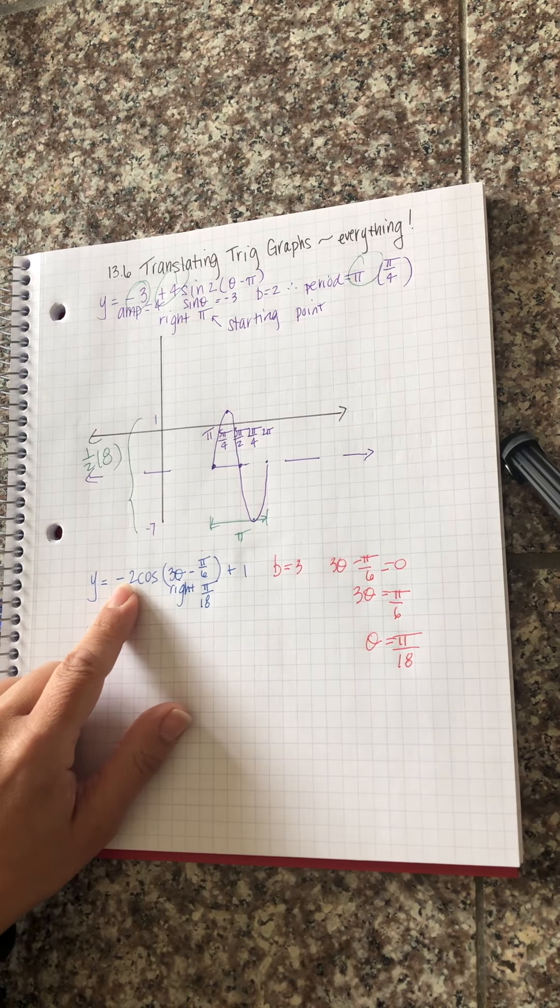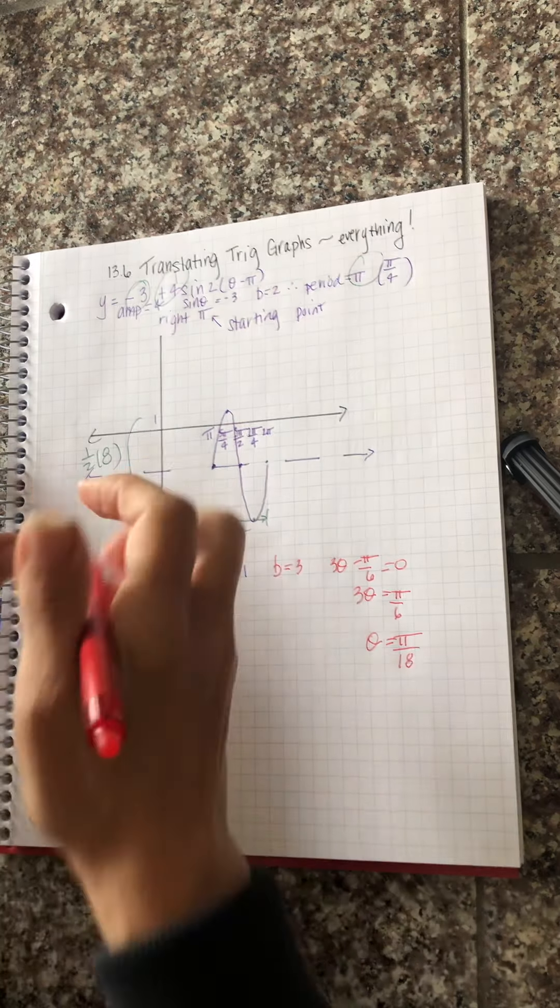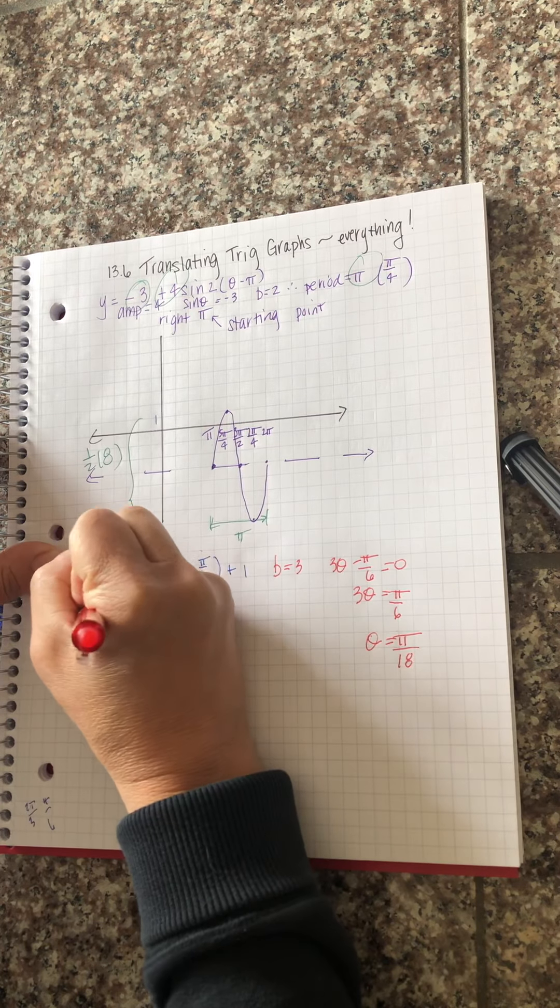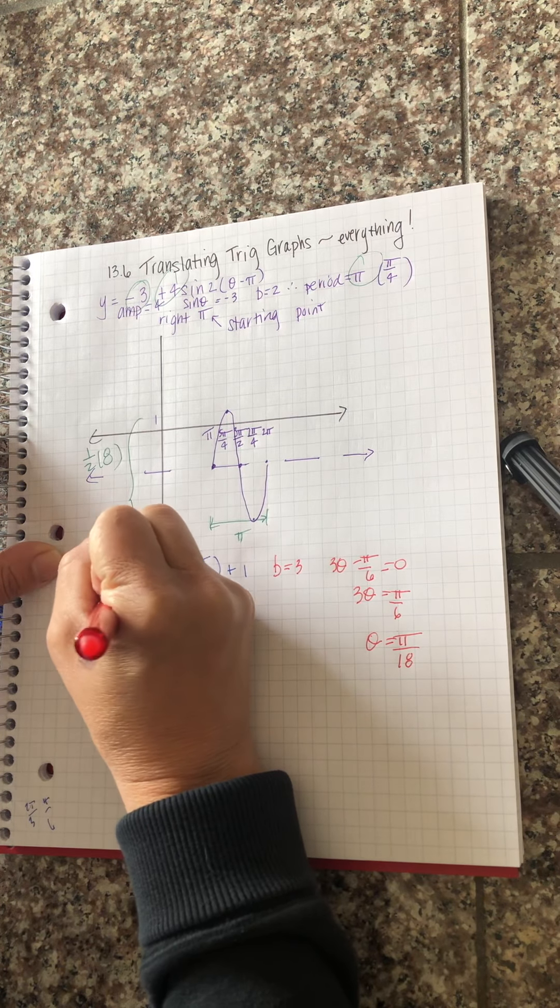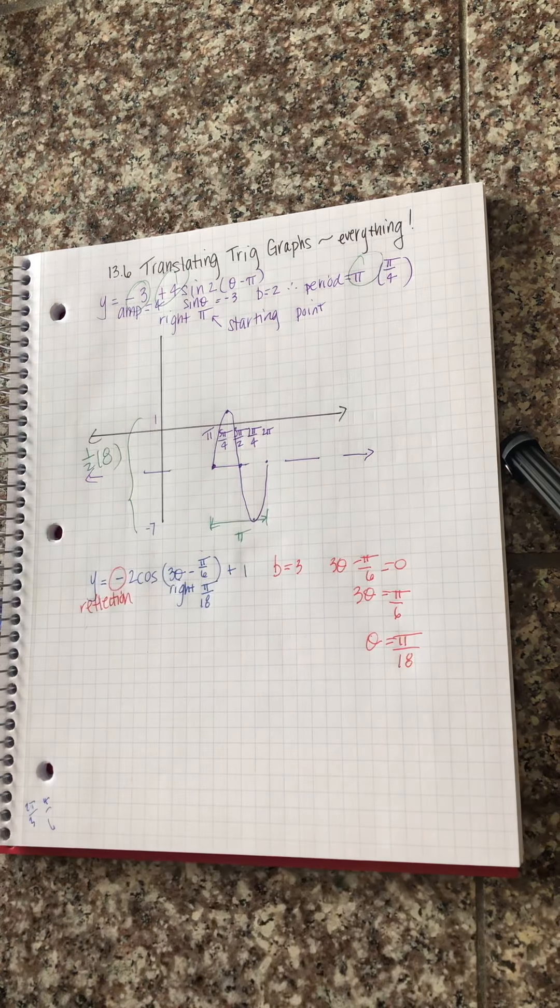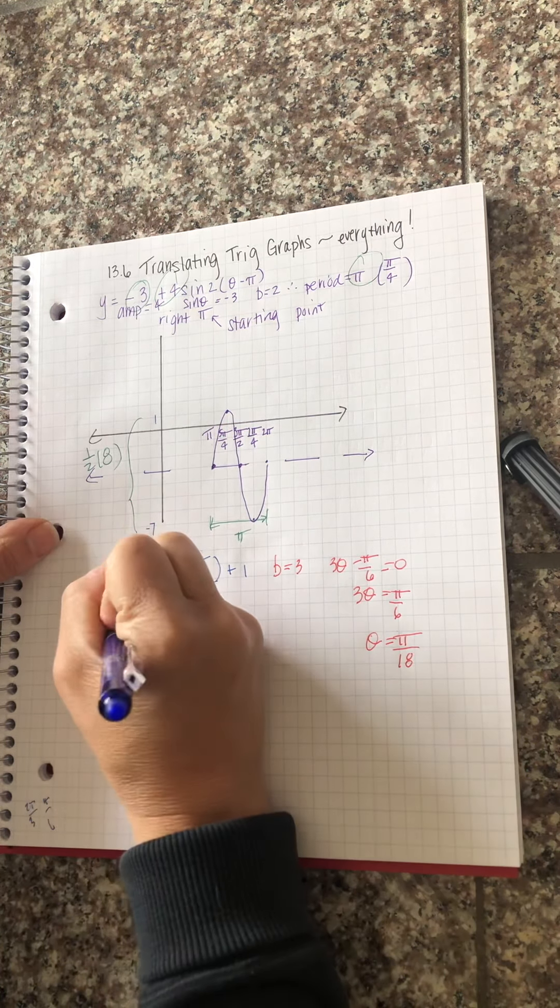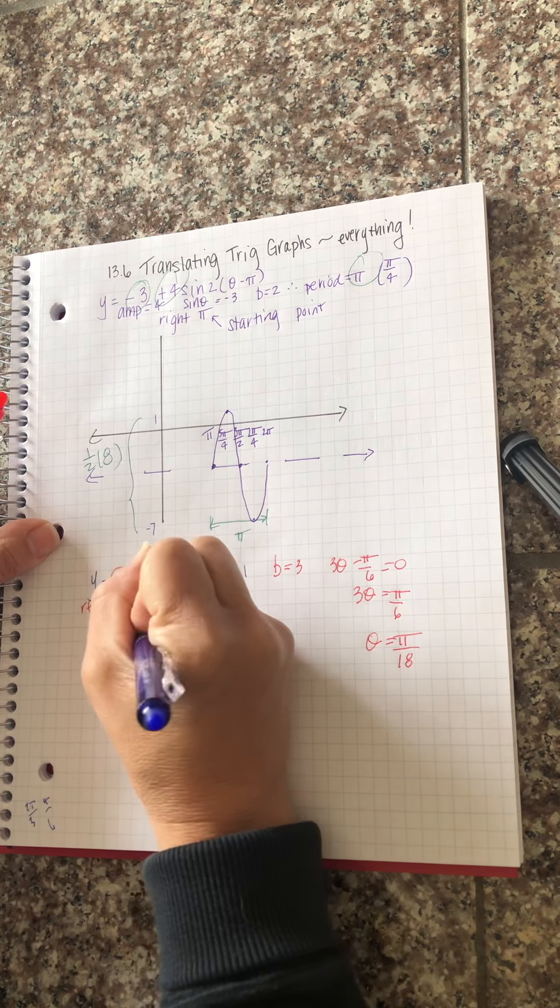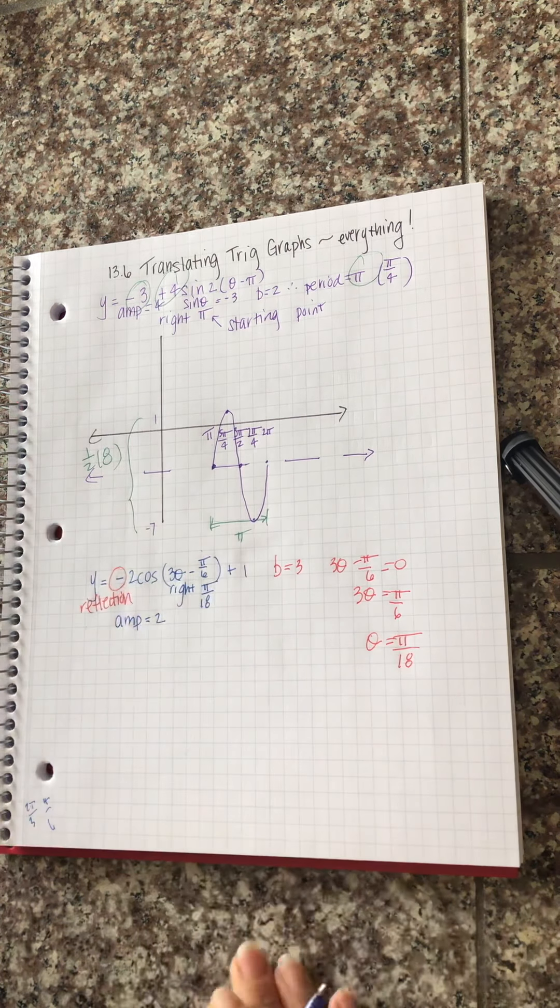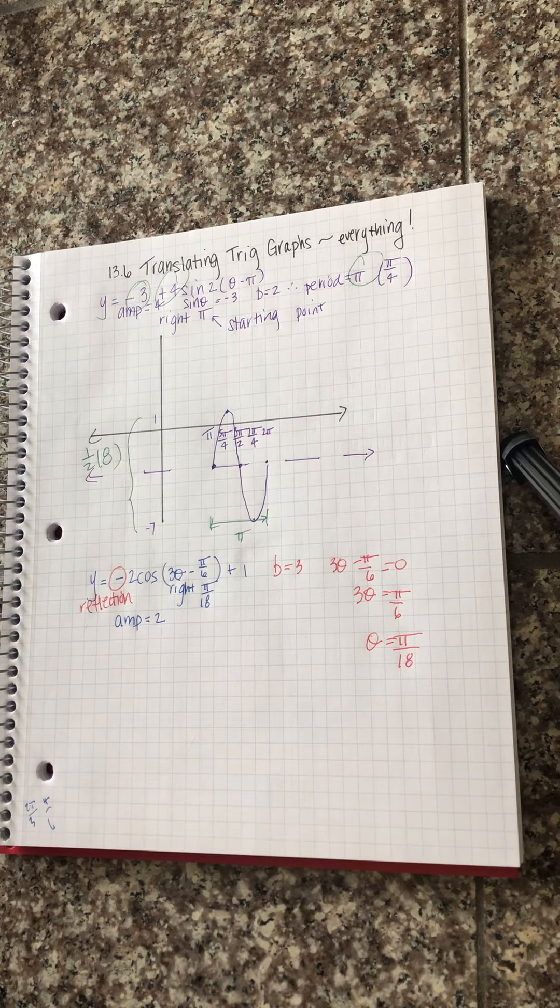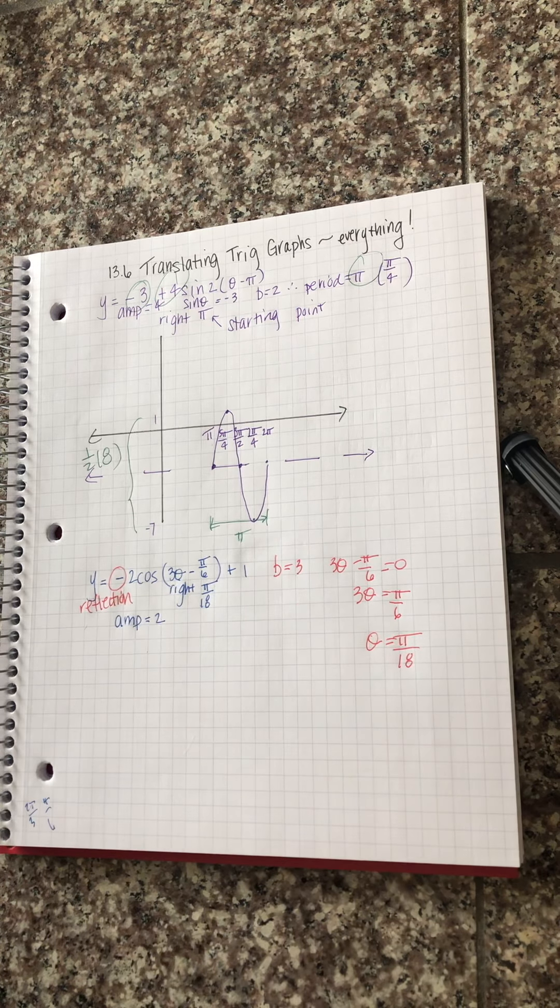A is negative. Amplitude is not. A is negative. That's a reflection. The amplitude is still 2. You can't have negative height. It doesn't exist. So A is negative.